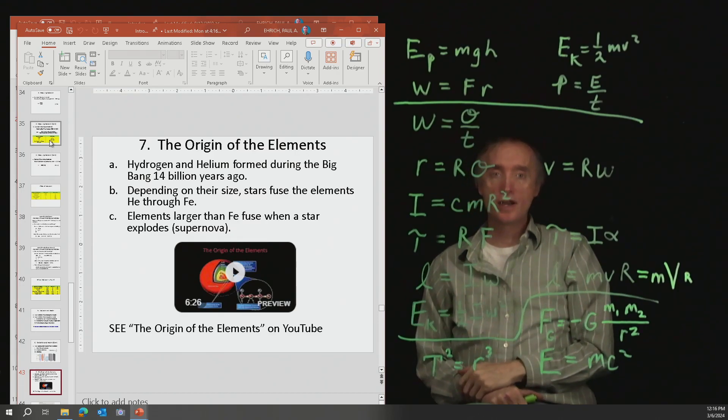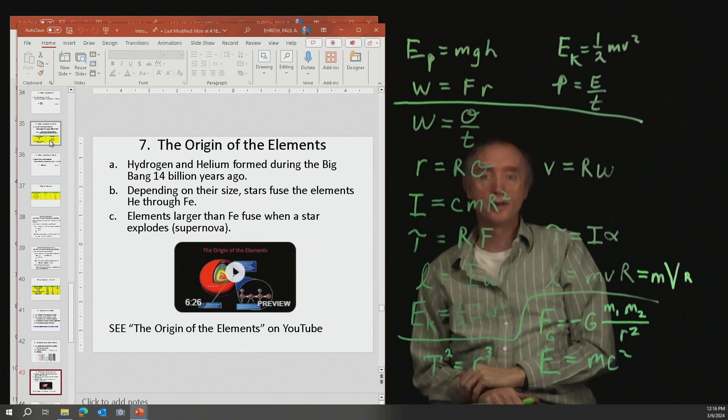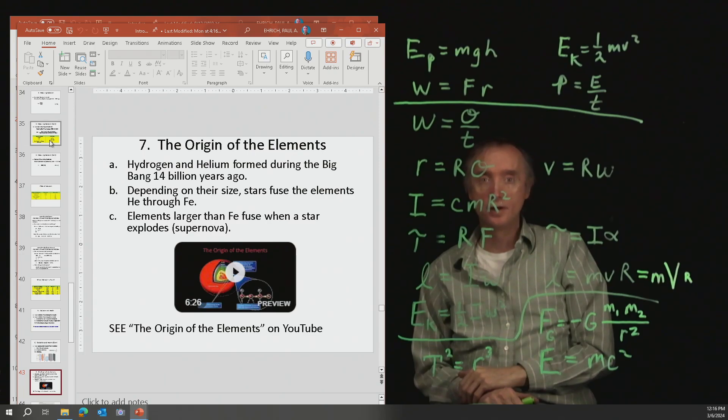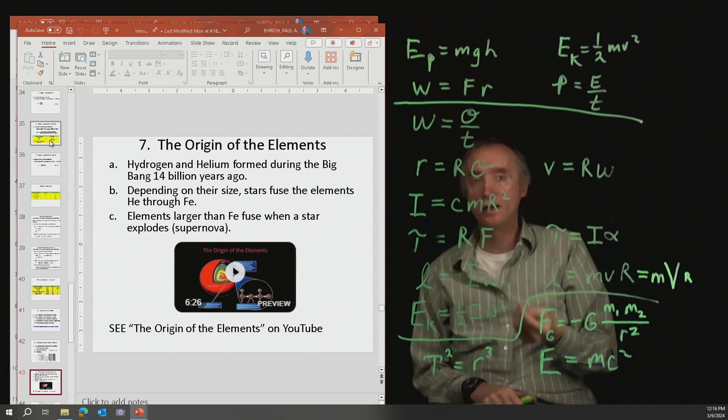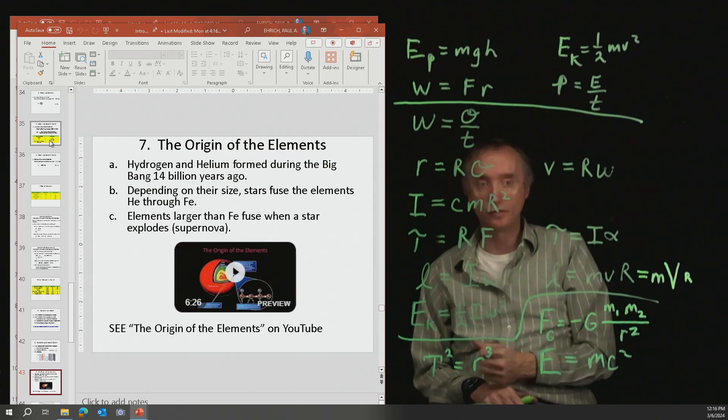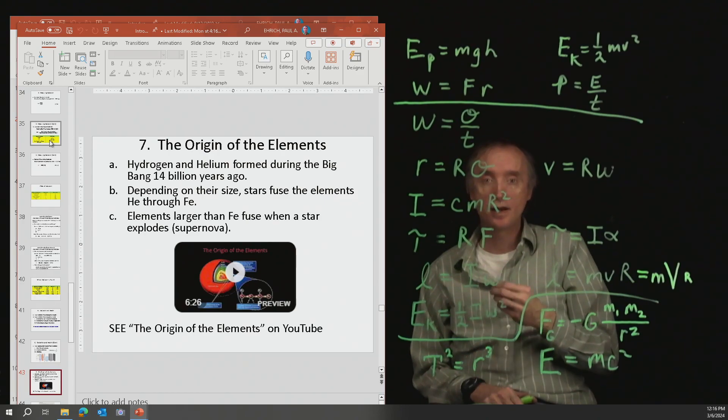Alright, I'm back, and now for our final segment in our review for the Unit 4 lecture exam: tell me, where did the elements in the periodic table come from? It comes from basically three places.